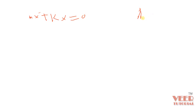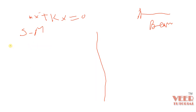Before solving this problem in Abaqus, we need to understand how the software will approach it. The governing equation is m x-double-dot plus k x equals zero, and we need to understand how we can relate this to a beam, since this equation is typically considered for a spring-mass system.